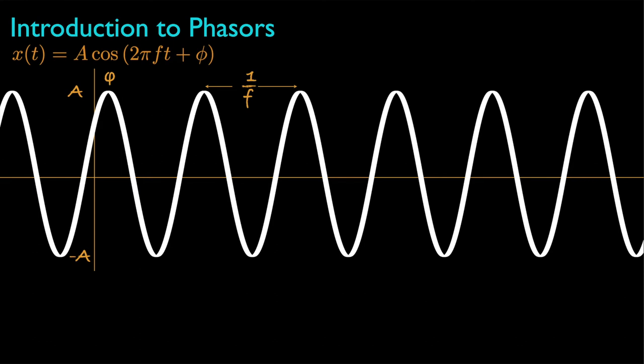With this notation, the frequency has units of cycles per second, or hertz. Sometimes, though, we'll specify the frequency in radians per second with this relationship between frequency in hertz and frequency in radians per second.